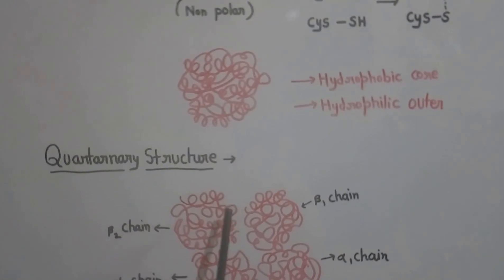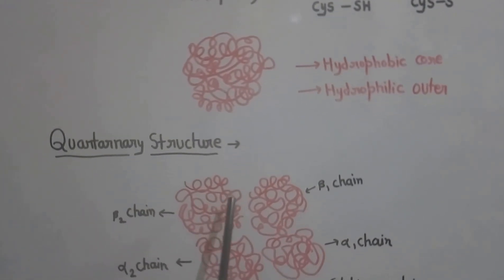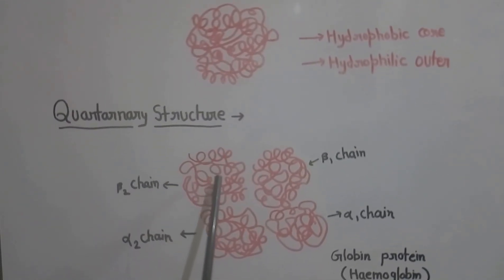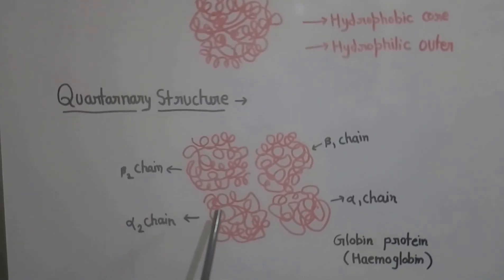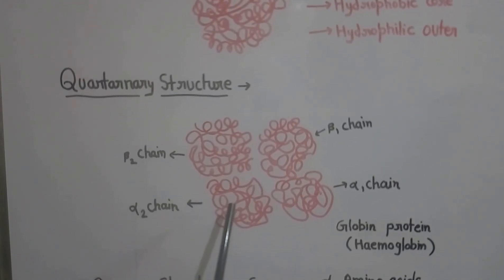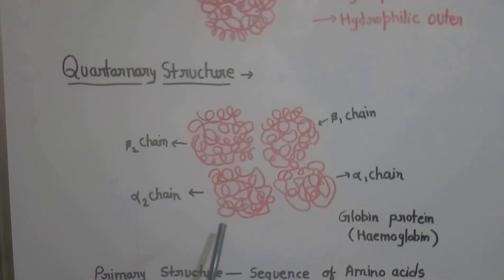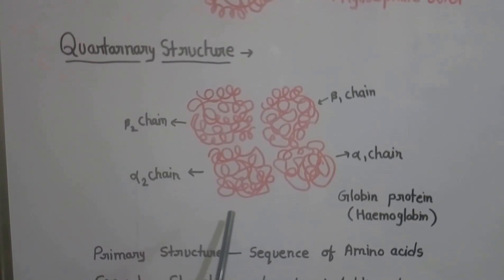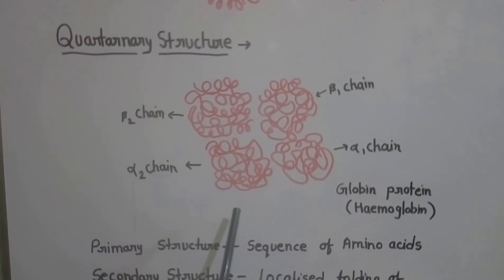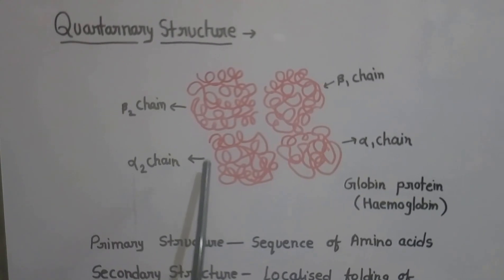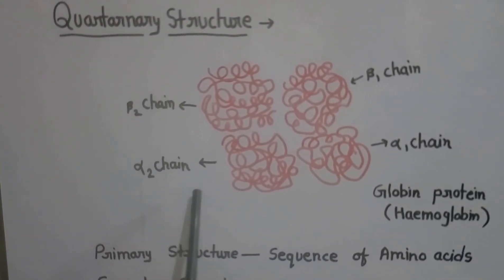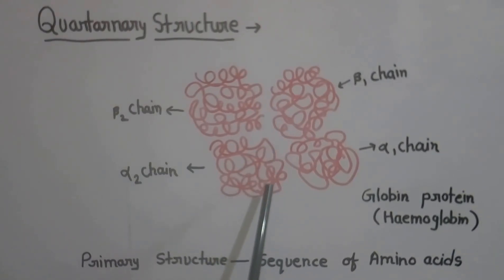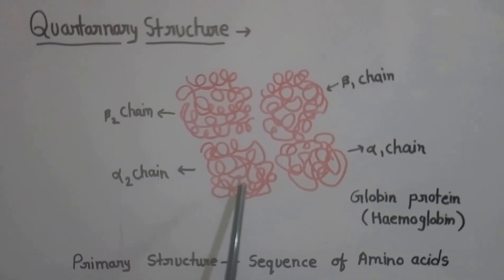Now we come to the quaternary structure. As we know, one polypeptide chain gives rise to the tertiary structure. In the case of protein, there may be more than one polypeptide chain present. For example, in the case of hemoglobin, there are four polypeptide chains present in the globin protein. Two chains are beta and two chains are alpha. The interaction between these four polypeptide chains gives rise to the quaternary structure of hemoglobin.